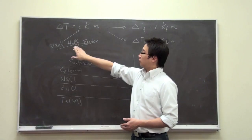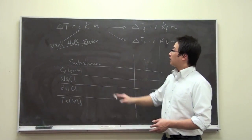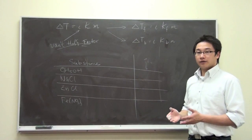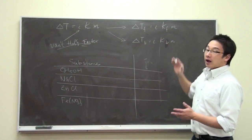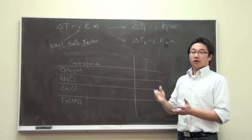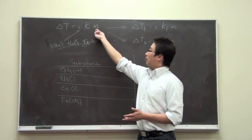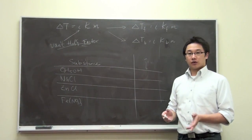Here we have i, which is called the Van't Hoff factor. The K is a constant, and the constant depends on the substance. We have two different constants for the boiling point and the freezing point. And the small m right here is the molality that you previously learned.